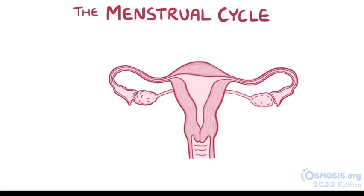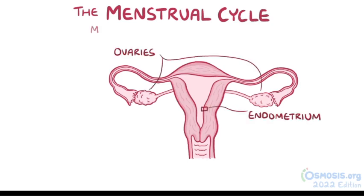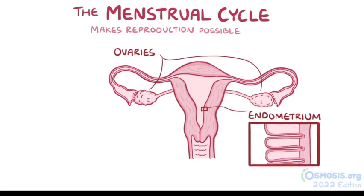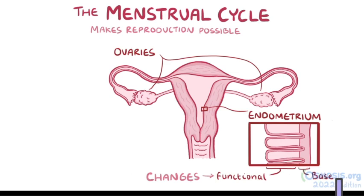The menstrual cycle refers to the regular changes in the activity of the ovaries and the endometrium that make reproduction possible. The endometrium is a layer of tissue lining the inside of the uterus. This lining consists of a functional layer, which is subject to hormonal changes and is shed, and a thin basal layer, which feeds the overlying functional layer.